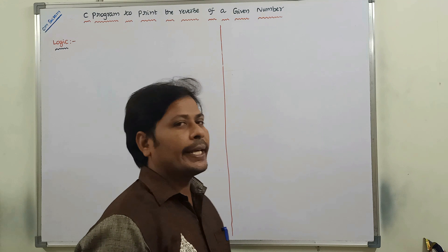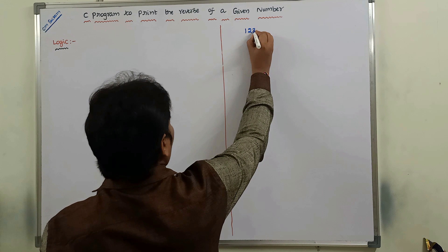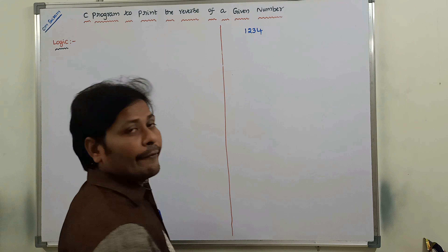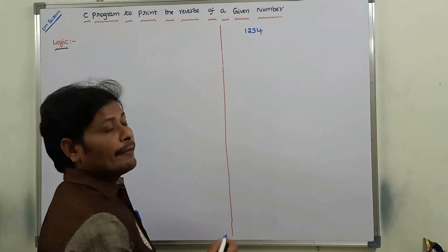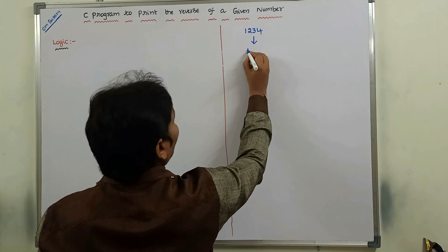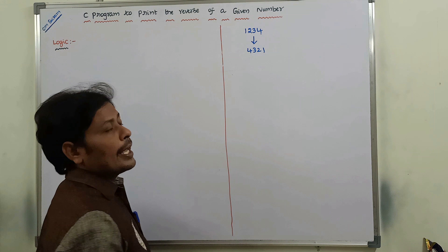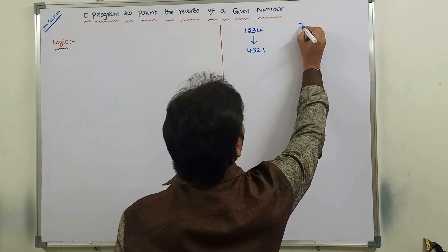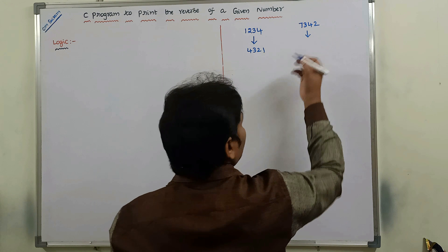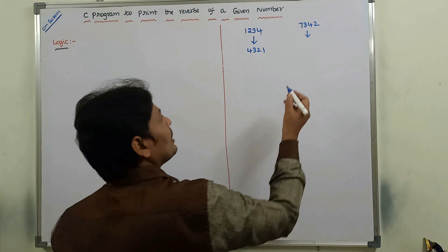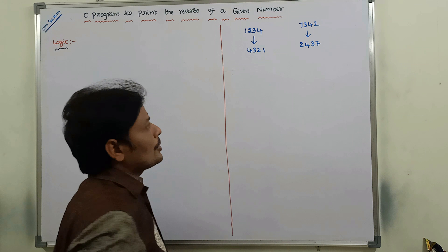Suppose I am taking the number 1234 — this is the given number. So to print the reverse of a given number, I am taking another number 7342. After reversing that given number, what we are getting? 2437.